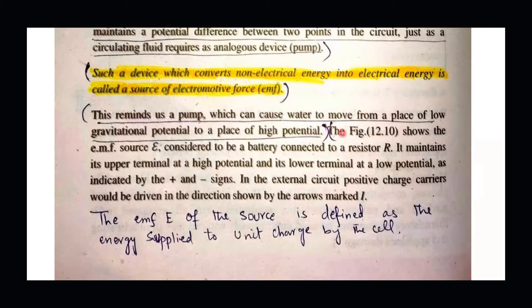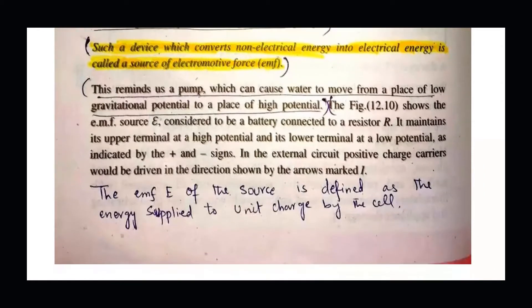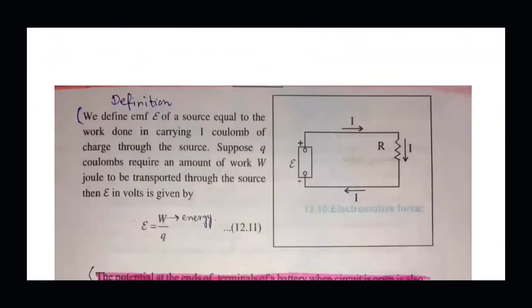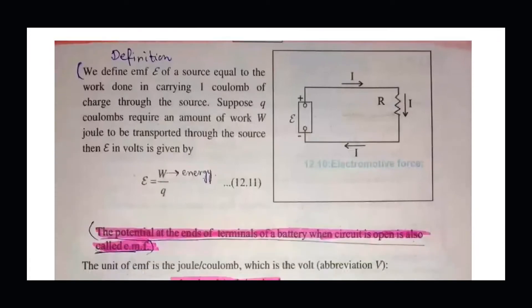In an electrical circuit, positive charges naturally move from the positive terminal to the negative terminal. But to keep the current continuous, you need to move charges from the negative terminal back to the positive. That source is known as electromotive force. So EMF of the source is defined as the energy supplied to the unit positive charge by the cell — meaning the energy supplied so that the charge can move.